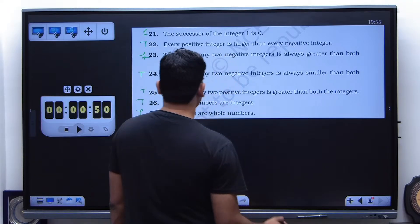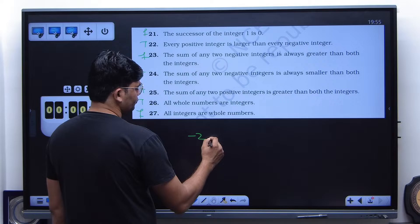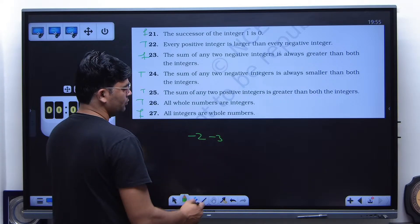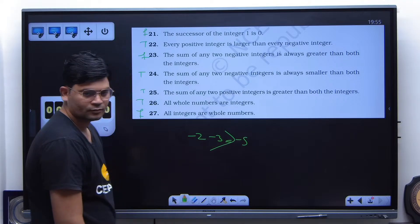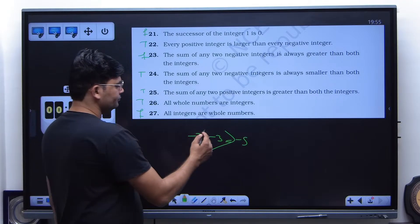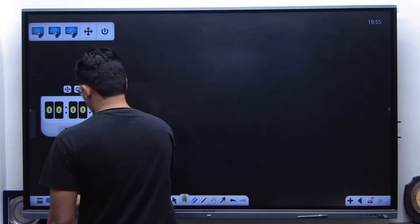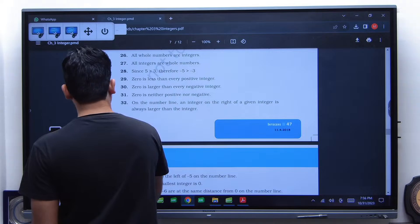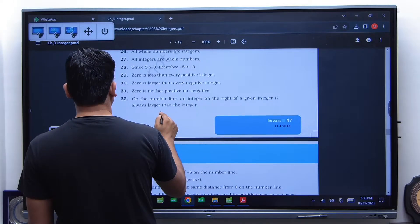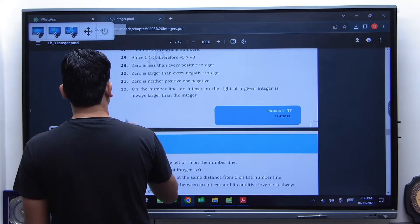False, good. Minus 5 is less than 2. False, good. You have done up to 27th, right? Right.